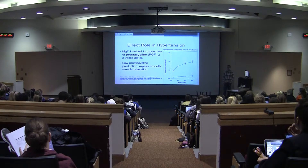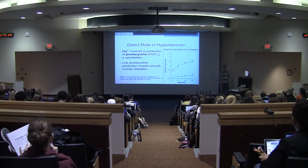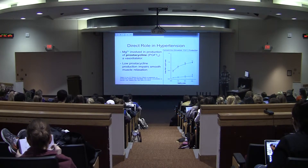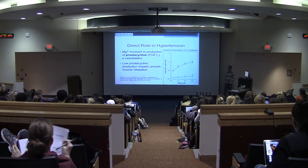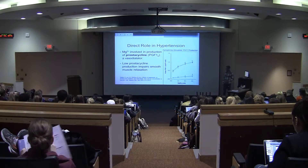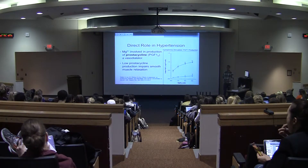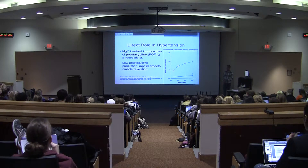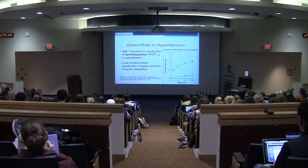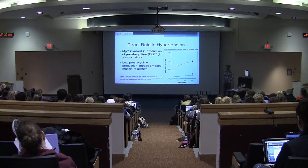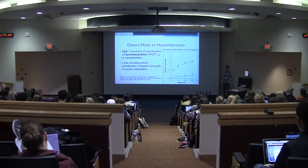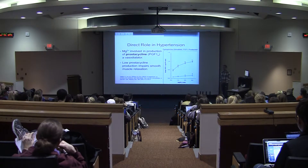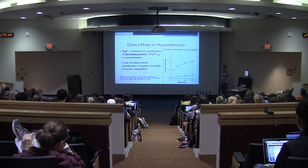In addition to these indirect roles, magnesium also has a direct role on hypertension. It actually augments the production of prostacyclin, which is a potent vasodilator. The graph on the right shows that with increased magnesium treatment of vascular endothelial cells — cells that exist along the vasculature — with increased magnesium treatment, you have an increase in ephedrine-stimulated PGI2 production. In addition to prostacyclin, magnesium is also involved in nitric oxide synthesis, which is also a potent vasodilator.